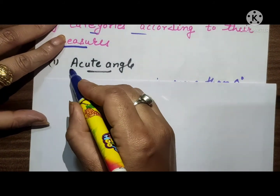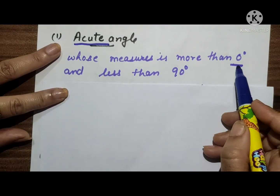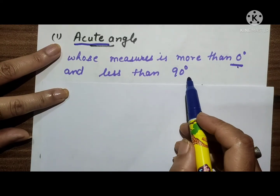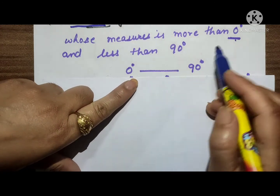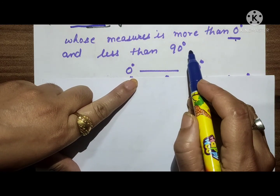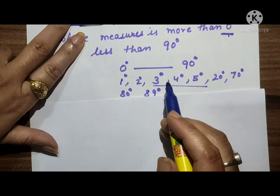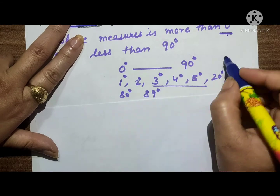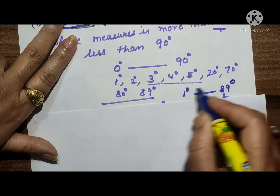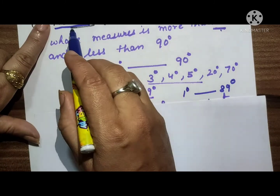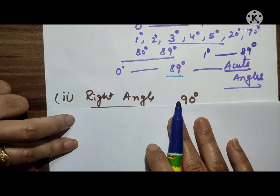First is the acute angle. An angle whose measure is more than 0 degrees and less than 90 degrees is called an acute angle. So any angle from 1 degree to 89 degrees — any angle in between — will be called an acute angle.